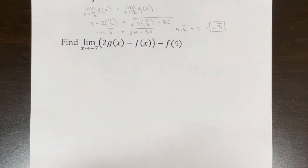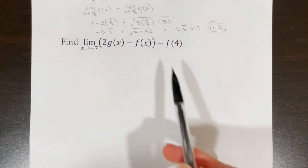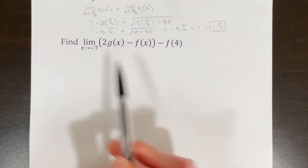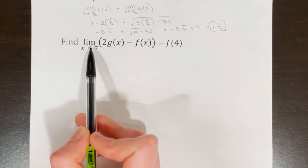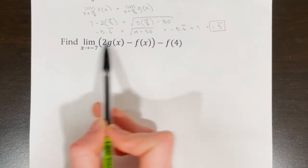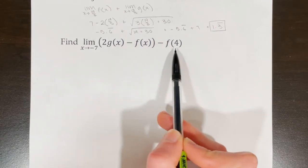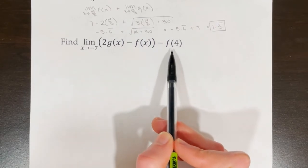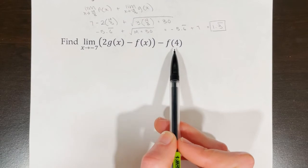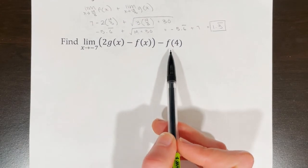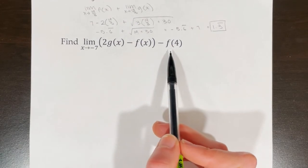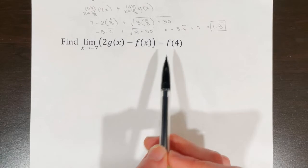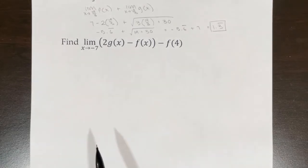This next example is a little different because at the end we have f(4) stuck onto the end. It's very important to remember that actually evaluating what a function is at an x value is different than evaluating the limit.